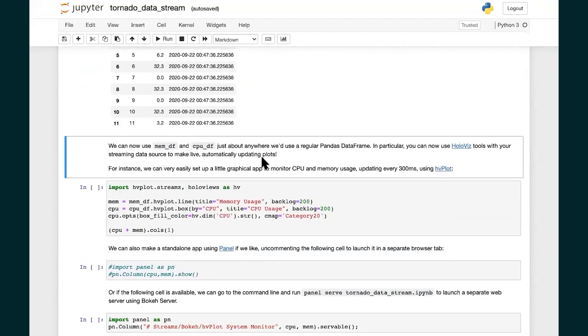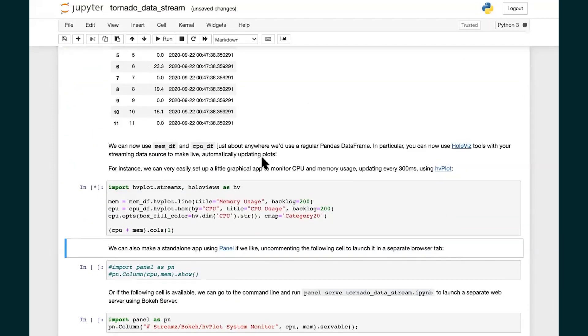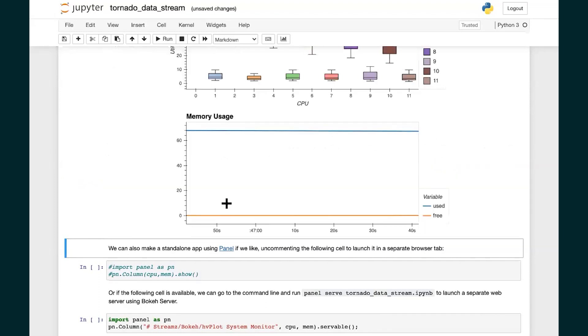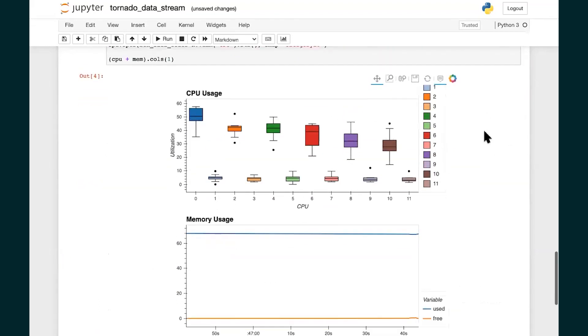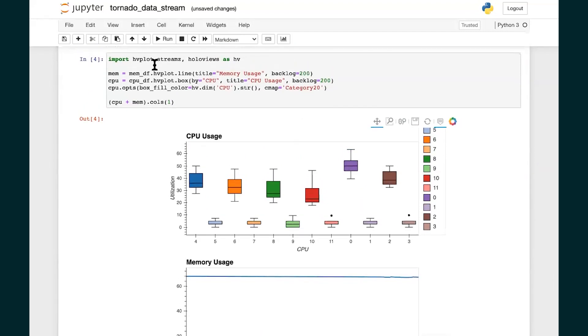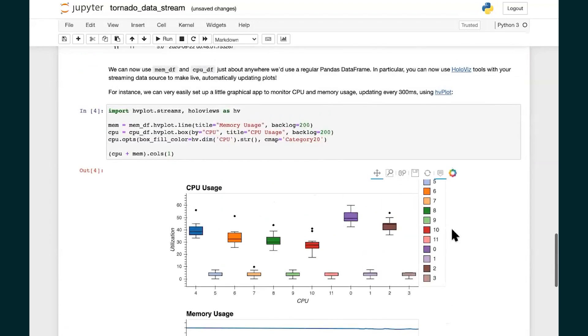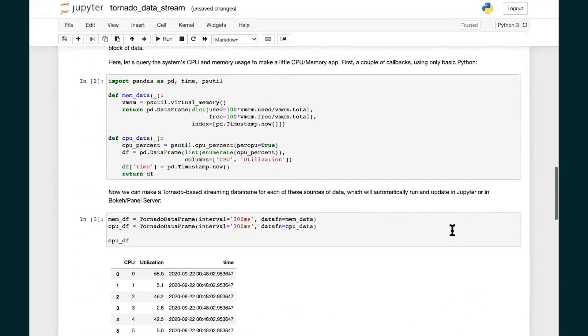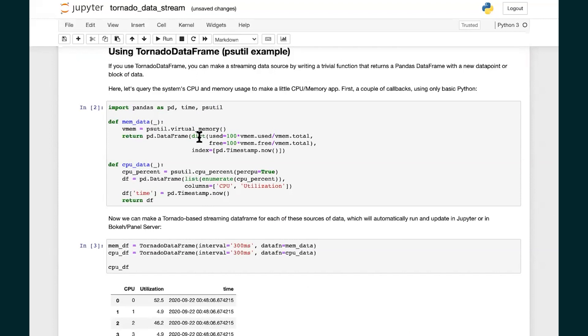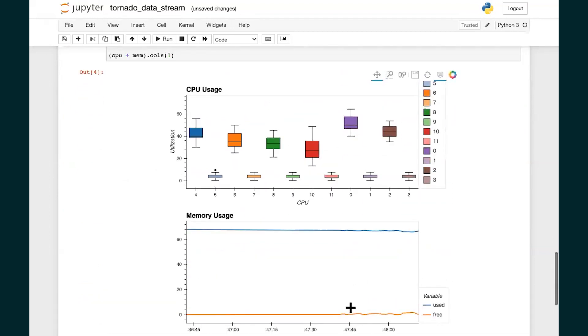They alternate here. These are virtual hyper-threaded CPUs. So only the even numbered ones are the real ones. The odd ones are just extras. Anyway, those details don't matter too much. All that matters is that there's a function here. It's being called every 300 milliseconds and it finds out the CPU and memory utilization and it comes back as a Streamz dataframe. So of course, if it's a Streamz dataframe, all you have to do to plot it is use hvPlot.